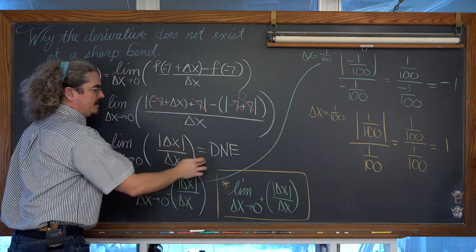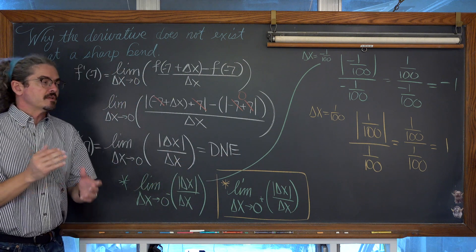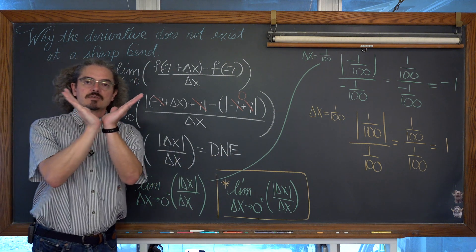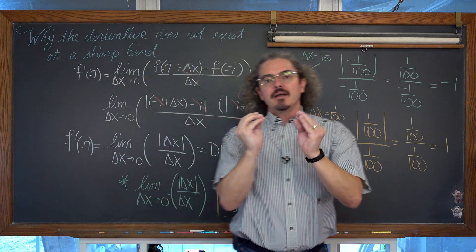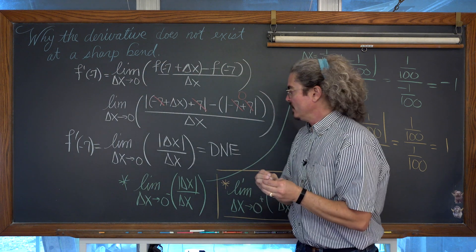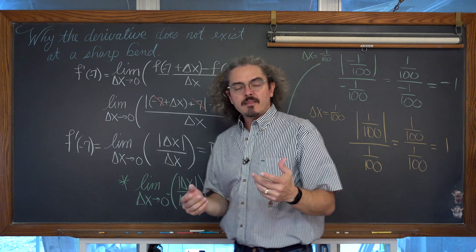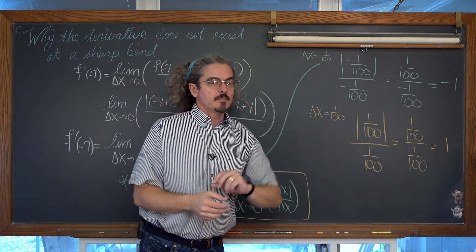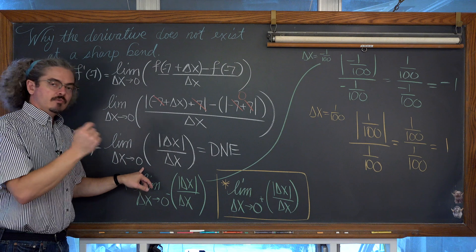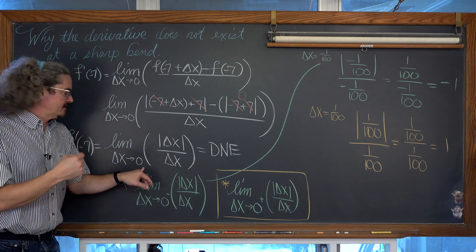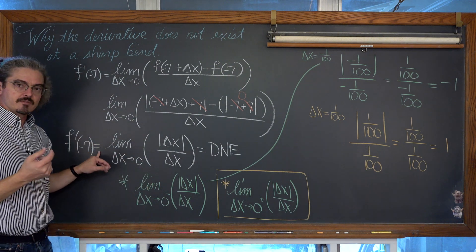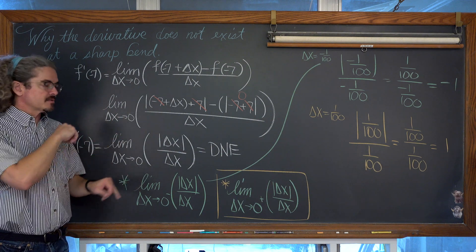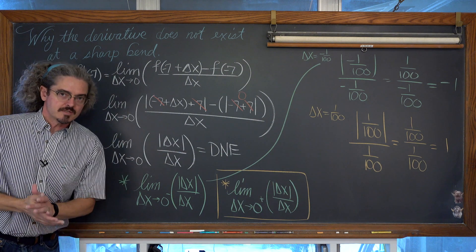That's what I need my students to show: if asked to justify why a derivative does not exist at a sharp bend, you must show work demonstrating that the left-hand limit and right-hand limit are not equal, showing your understanding that the definition of a derivative is based on a two-sided limit, which only exists when the one-sided limits are equal.